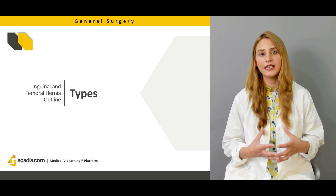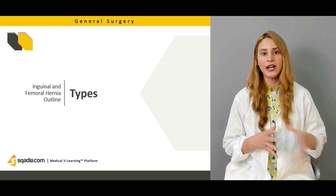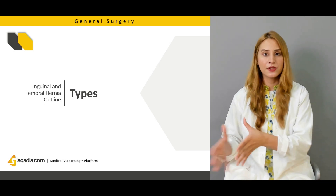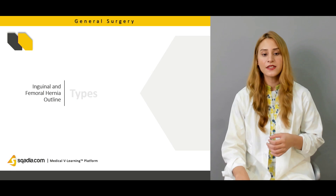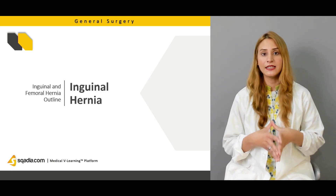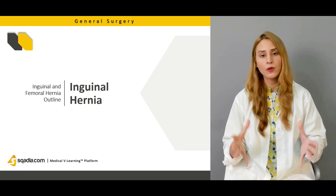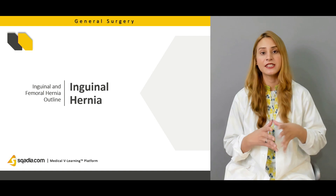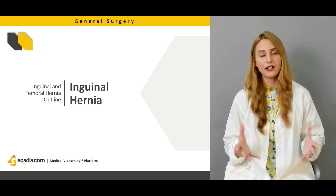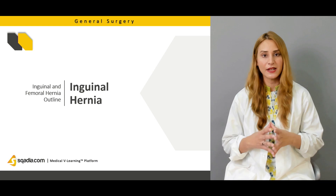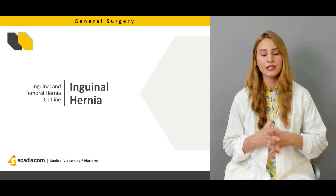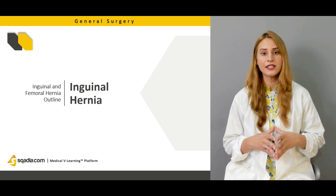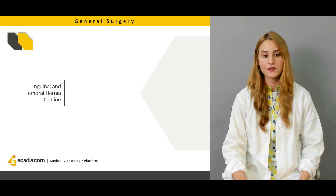We'll talk about the different types of inguinal hernias — the direct inguinal hernia and the indirect inguinal hernia — and also the femoral hernias. We'll cover the anatomy of the inguinal canal and discuss hernias coming from the deep inguinal ring and hernias coming from the Hesselbach triangle, including direct and indirect inguinal hernias.